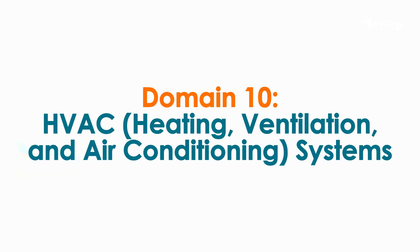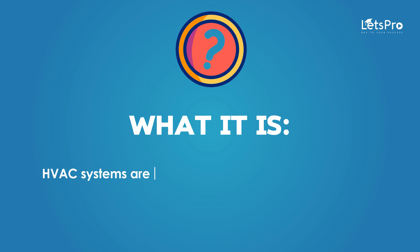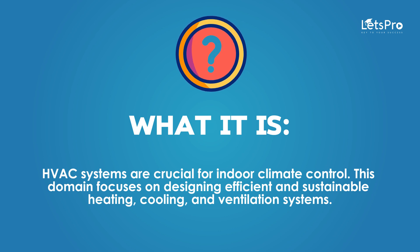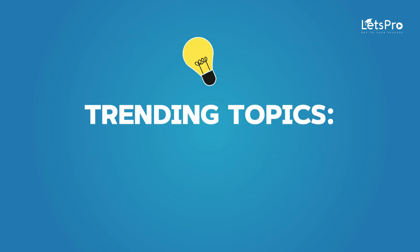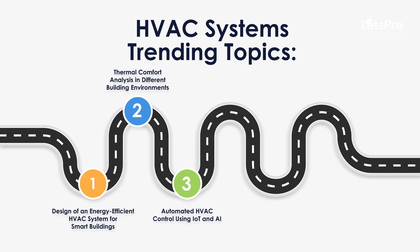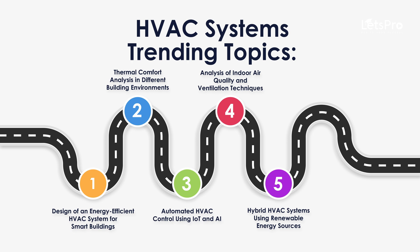Domain 10: HVAC — Heating, Ventilation and Air Conditioning systems. HVAC systems are crucial for indoor climate control. This domain focuses on designing efficient and sustainable heating, cooling and ventilation systems. Trending topics include: design of an energy efficient HVAC system for smart buildings, thermal comfort analysis in different building environments, automated HVAC control using IoT and AI, analysis of indoor air quality and ventilation techniques, and hybrid HVAC systems using renewable energy sources.